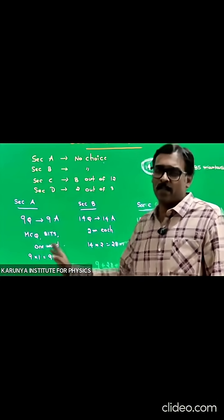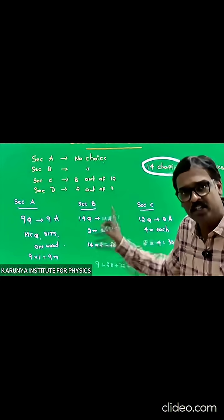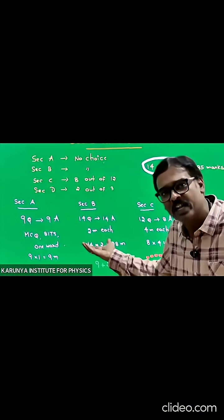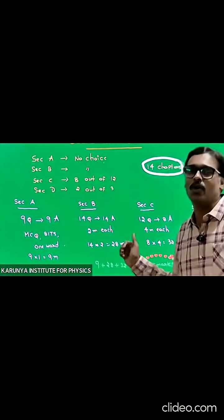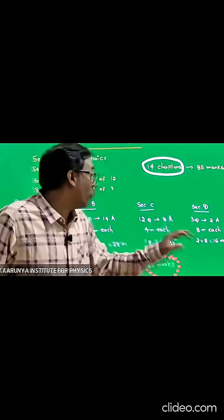Section B has two marks questions with no choice. Fourteen questions are there, answer all fourteen. Fourteen into two equals twenty-eight marks. Section C has four marks questions.